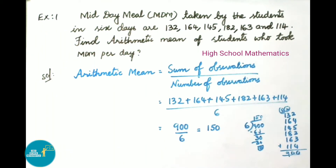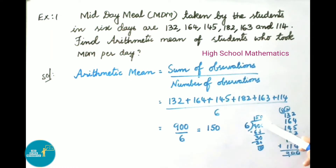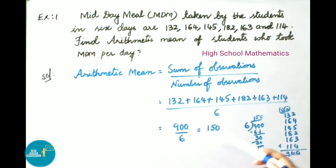Solution: Arithmetic mean equals sum of observations divided by number of observations. Adding all 6 values: 132 + 164 + 145 + 182 + 163 + 114 = 900, divided by 6 = 150. Therefore, on average, each day 150 students had midday meal.